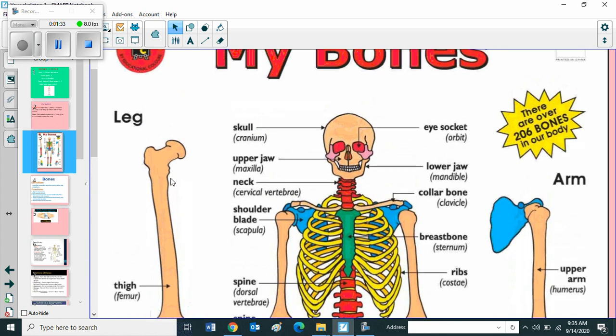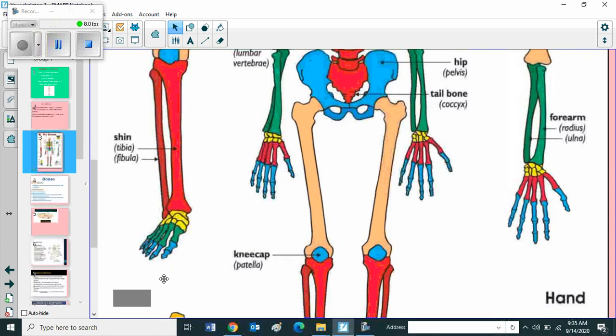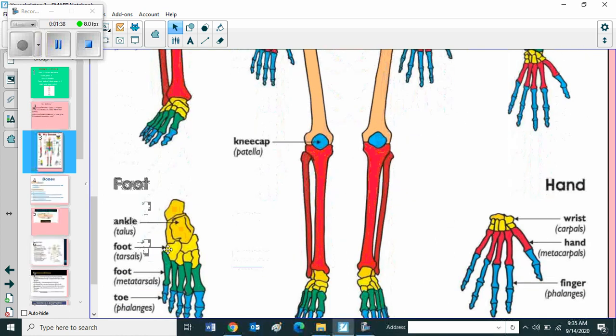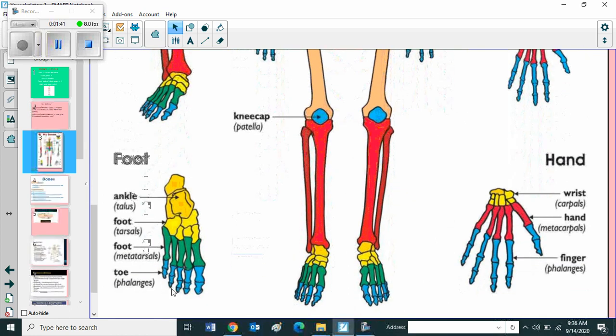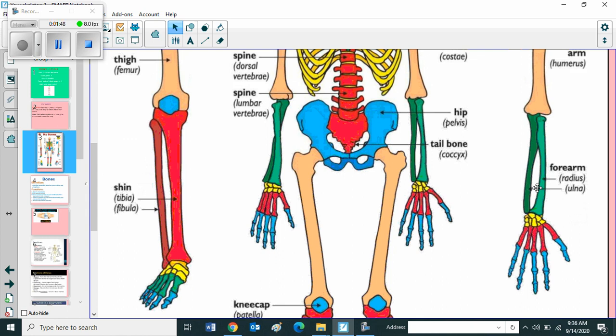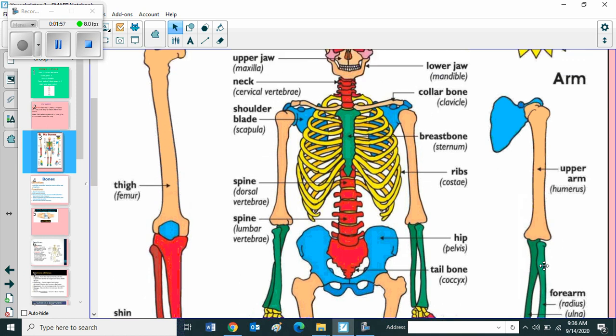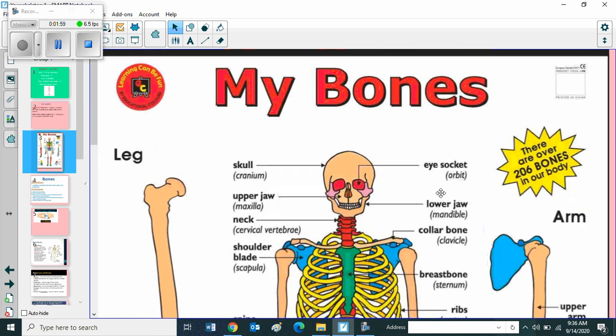Thigh. Shin. Foot. Ankle. Toe. Then hand. You can see wrist. Hand. Finger. Arm contains humerus. Then forearm contains radius and ulna. Children, there are over 206 bones in our body.